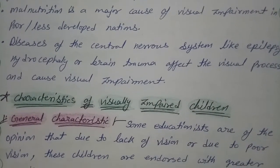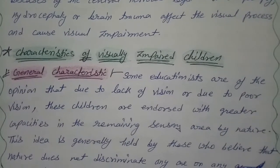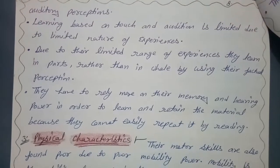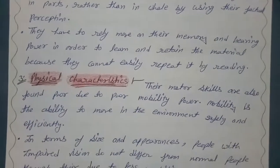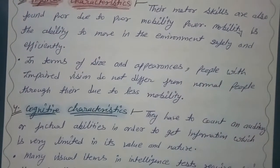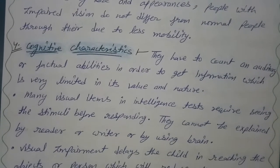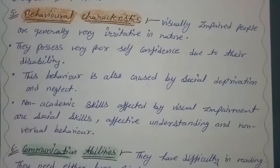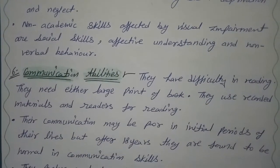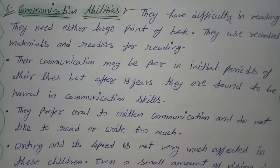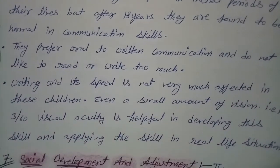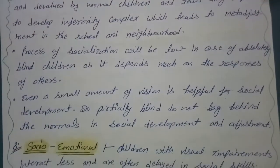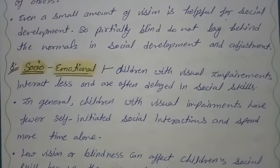Characteristics of a visually impaired child. First point is general characteristics. Second point is educational characteristics. Third point is physical characteristics. Fourth point is cognitive characteristics. Fifth point is behavioral characteristics. Sixth point is communication abilities. Seventh point is social development and adjustment. Social emotional characteristics.